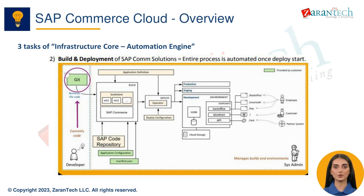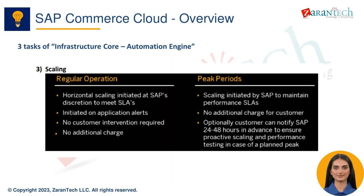For example, when you create a new SAP Commerce Cloud environment via the portal, the automation engine handles all the provisioning on Azure behind the scenes. When you build and deploy new application code, the automation engine handles the entire CI/CD pipeline to get changes live.